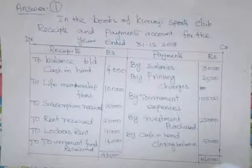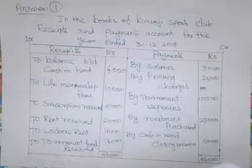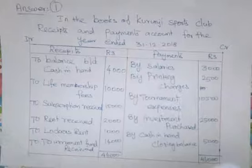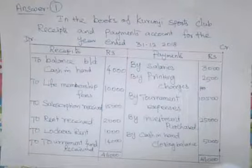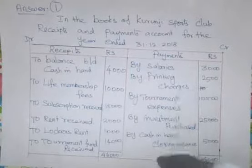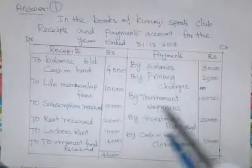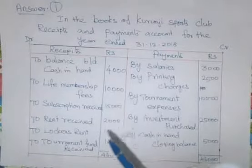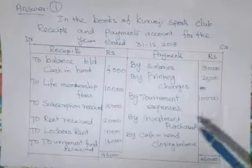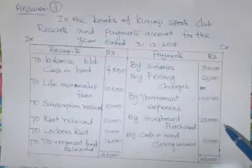Next, Life Membership Fees Rs. 10,000. By salary — salary is a payment expense, so salary on payment side: Rs. 3,000. By printing charges — that is also expenditure: Rs. 2,500. By tournament expenses Rs. 10,500. Receipts and Payments Account is related with capital and revenue nature. Capital items and revenue items related with previous year, current year, and subsequent year. By tournament expenses Rs. 10,500. By investment purchase Rs. 25,000.